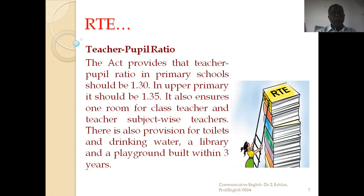There is also provision for toilets and drinking water, a library, and a playground to be built within 3 years. The government should provide all these facilities — especially drinking water, toilets, a library, and a playground — within 3 years. These are the facilities that the RTE Act mandates.